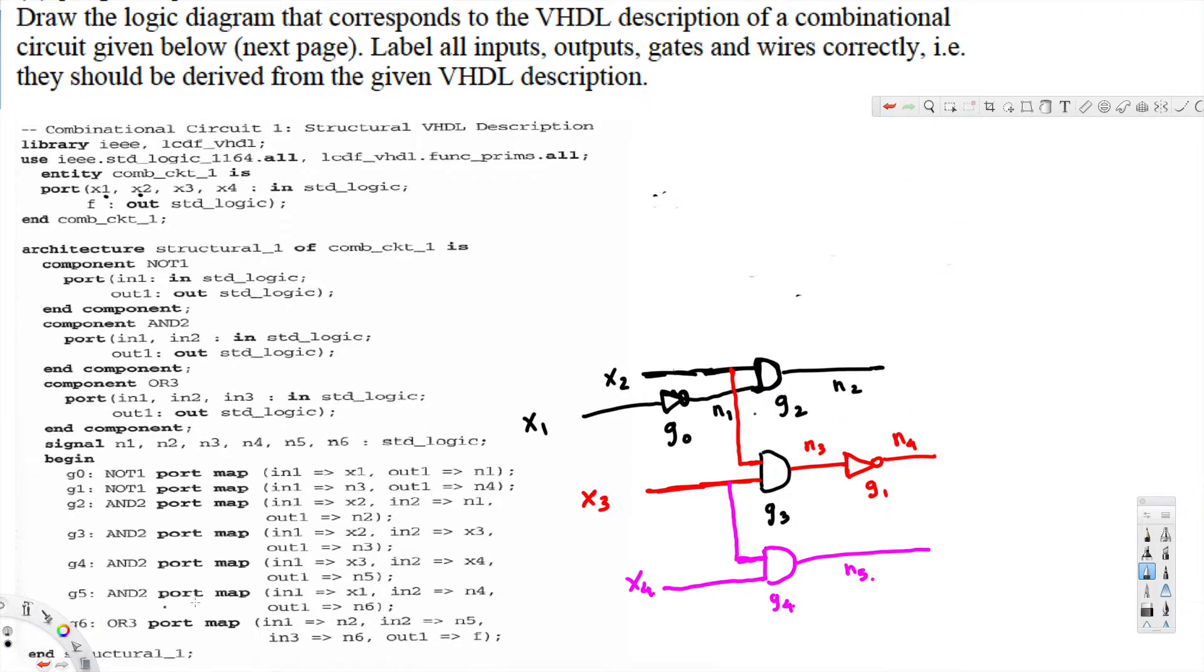g5, for this one input is x1. Here we have x1. Let me bring a wire from here. The input is x1 and another input is n4.